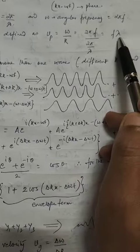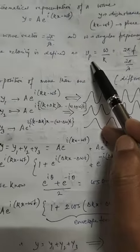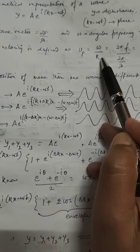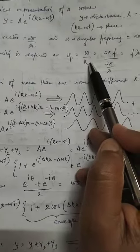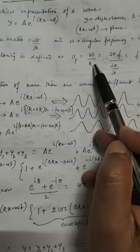Lambda cancels out, giving frequency times wavelength, which is the velocity of the wave. This is the phase velocity, vp equals ω/k. In the next lecture, we will see what is group velocity.